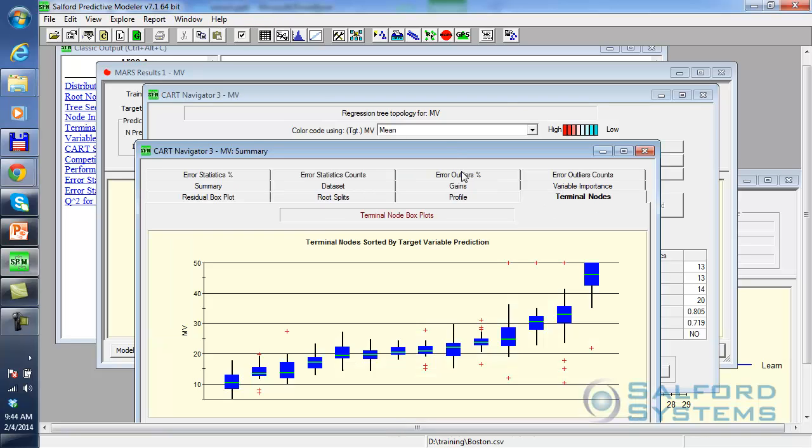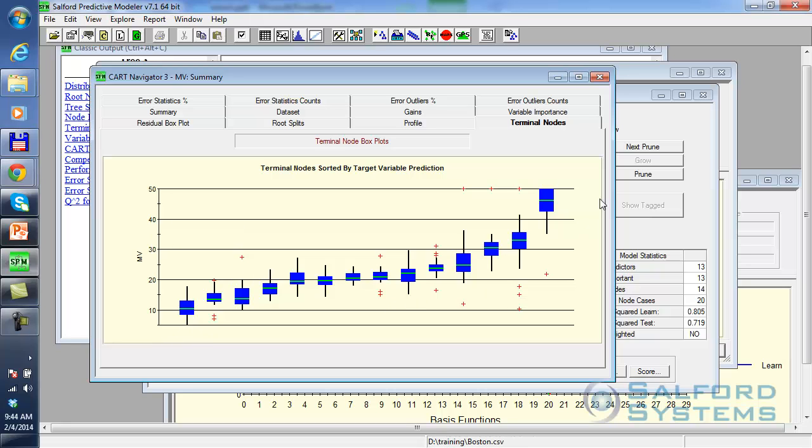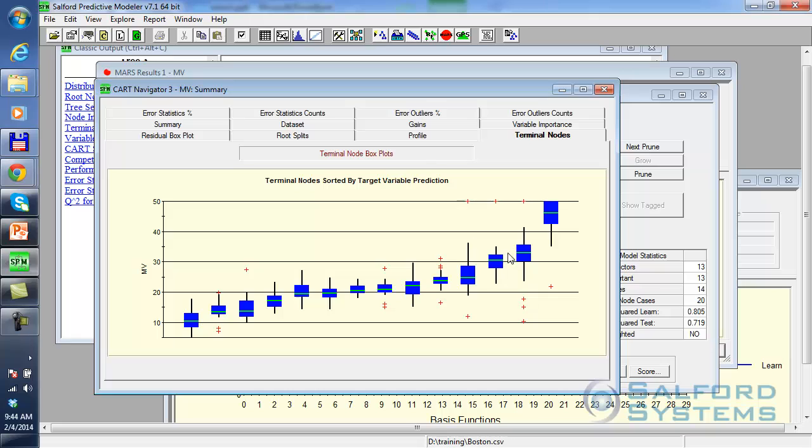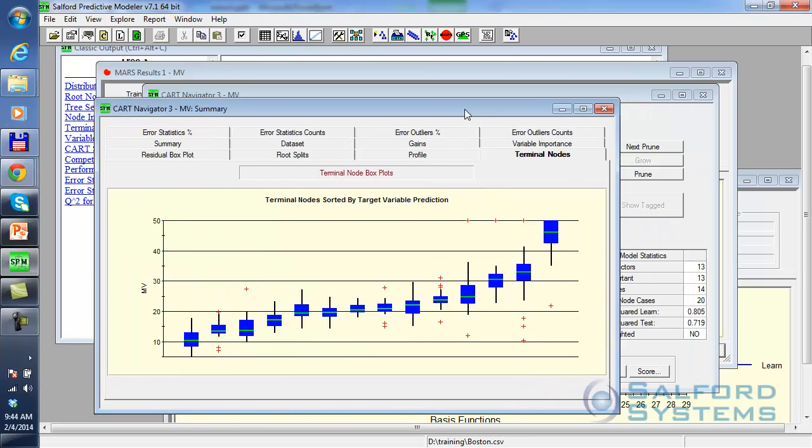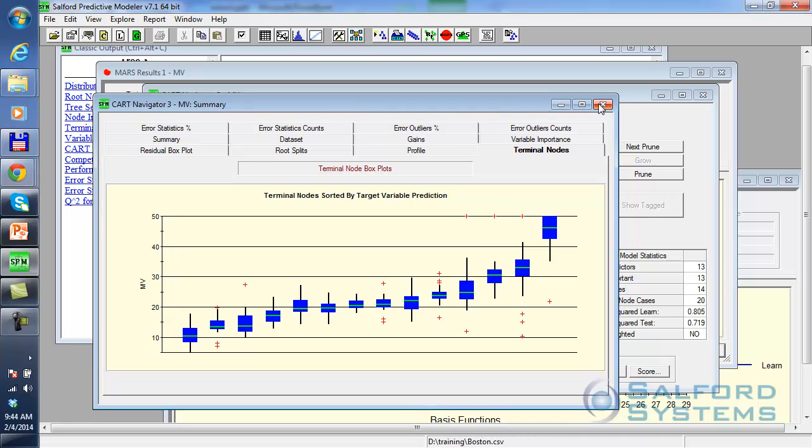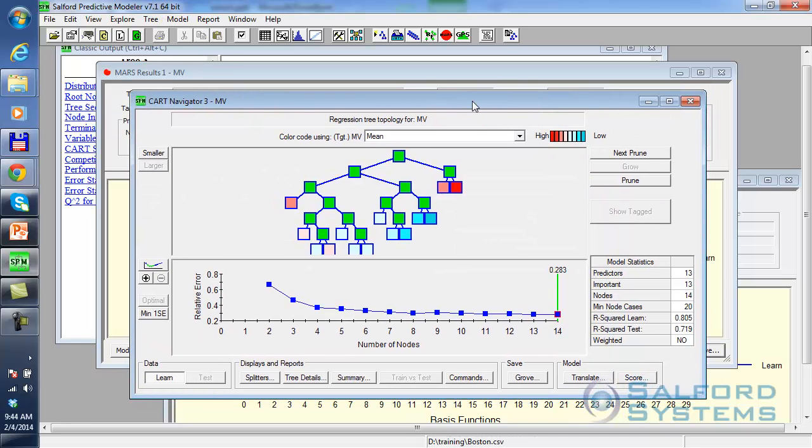When you click on the summary here and look at the terminal nodes, this is the overall box plot that shows the result of applying regression tree strategy to this specific population of homes, starting from the highest priced segment all the way down to the lowest priced segment, and all of the intermediate ones. And that is essentially how the conventional regression tree approaches a regression problem.